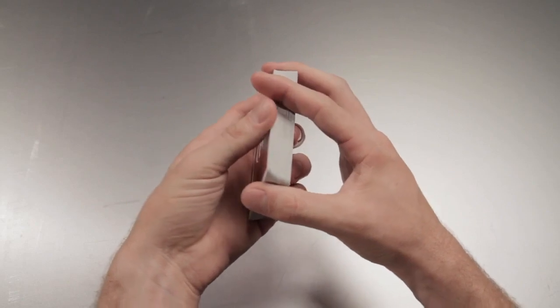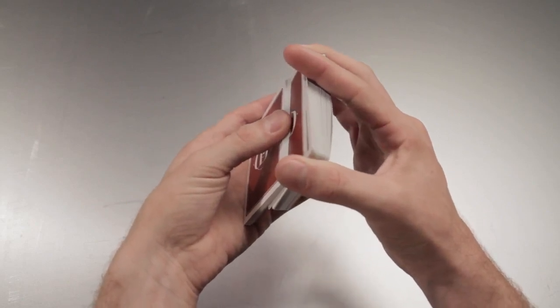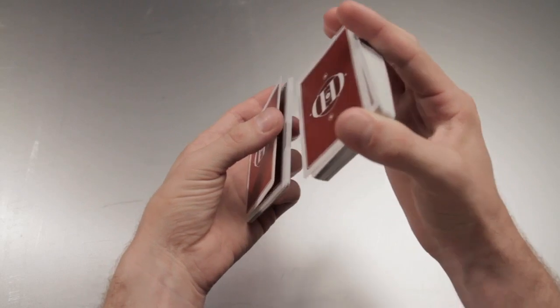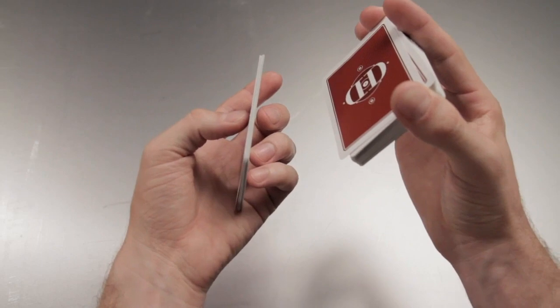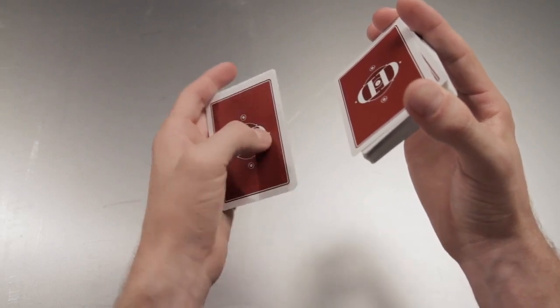Now with your thumb, peel off a small portion of the deck and raise the right hand up. These cards are still maintained by the thumb, fingers, and index finger.